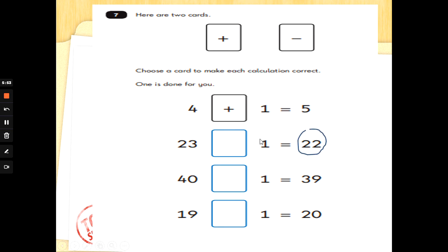So here, 23 something one, and we've got 22 after the equal sign. 22 is smaller than 23, so that only makes sense for that to be a subtraction. We've got 40 here, something one, and we've got 39 after the equal sign. 39 is less, so that must be a subtraction again.